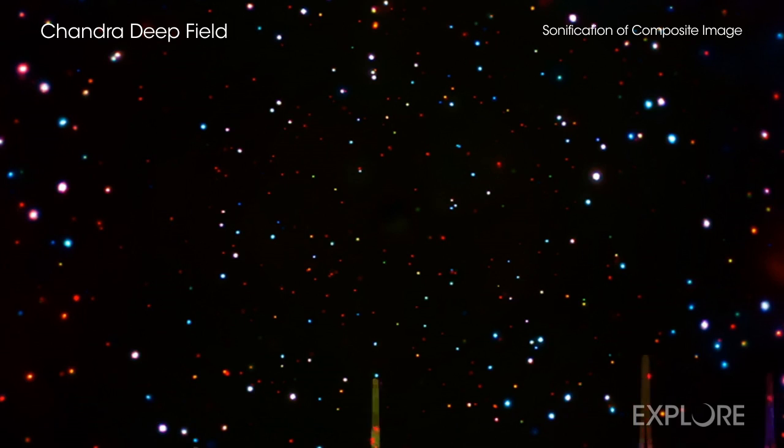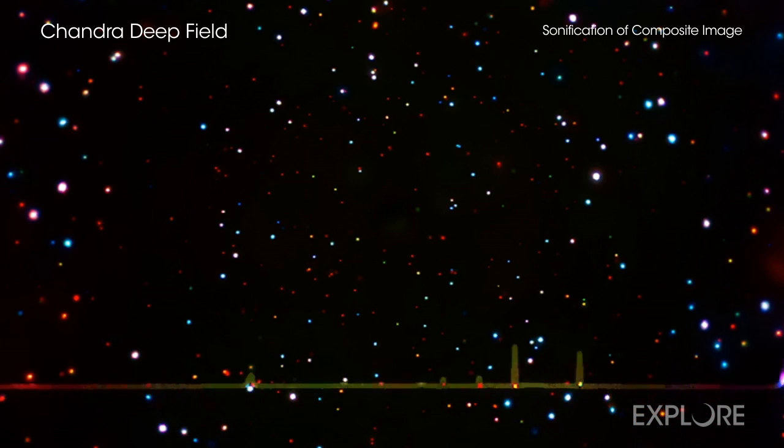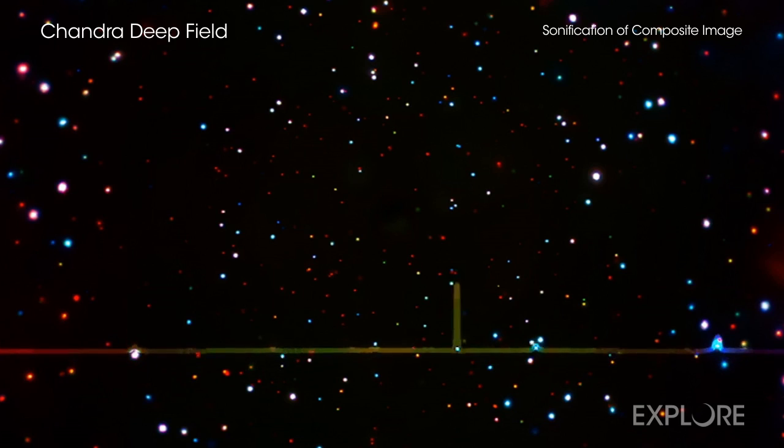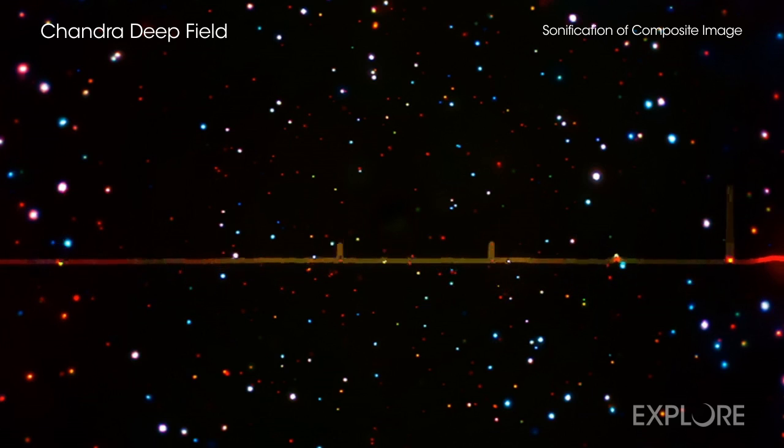At first glance, this image may appear to be a view of stars. Rather, almost all these different colored dots are black holes or galaxies. Most of the former are supermassive black holes that reside at the centers of galaxies.